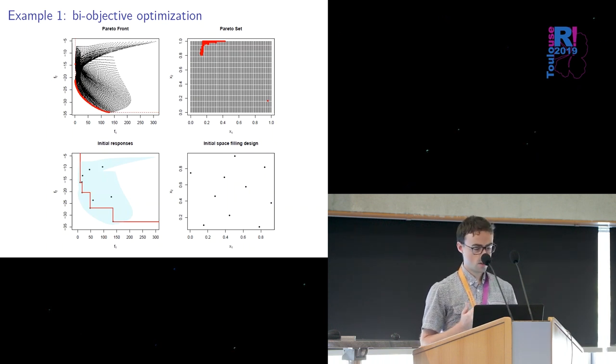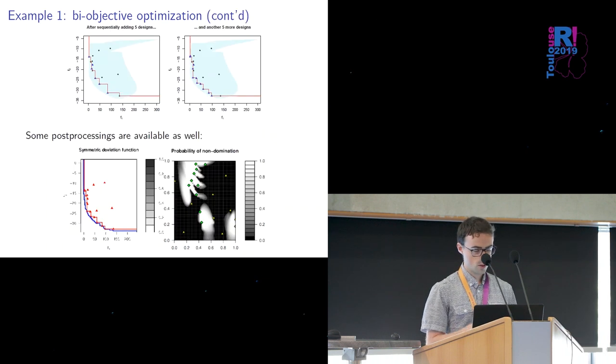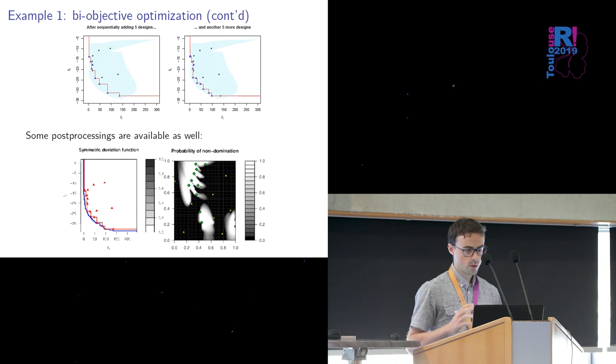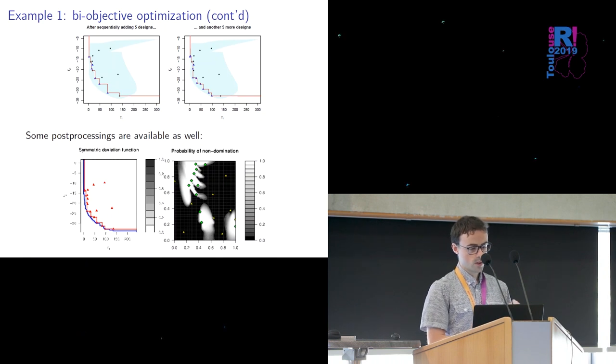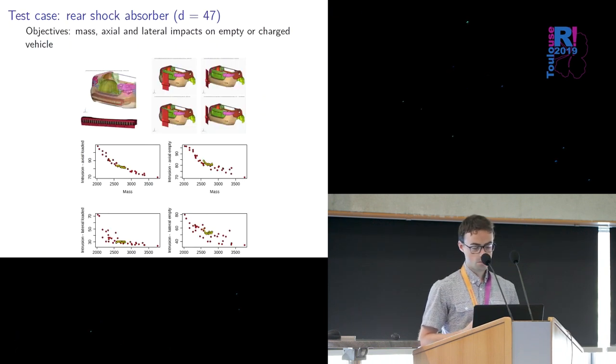So we start adding first five new points one by one and then five more and as you can see as we add more points we get closer and closer to the true Pareto front so that's really selecting points as best as possible to not waste any observation. And what's good with Gaussian processes that they provide some post processing capabilities with their uncertainty quantification capabilities so for instance we're able to predict the location of the true Pareto front even if we don't have observations everywhere and we can also compute probabilities of non-domination in the input space so that we can have more feedback on the problem.